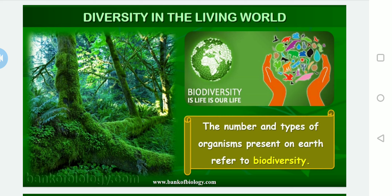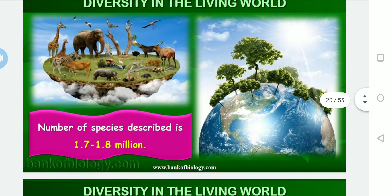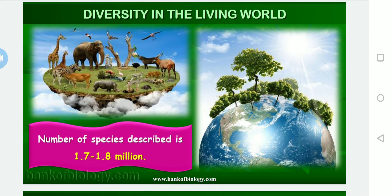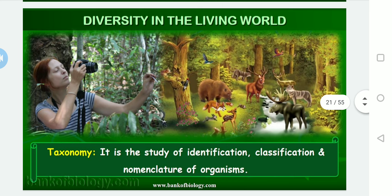There are various types of organisms present on the earth. Till now, the number of species described is about 1.7 to 1.8 million — that is about 17 to 18 lakh species described. There are still millions of species yet to be discovered. Every day, scientists in different parts of the world are discovering new species of plants and animals.